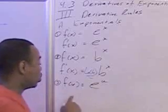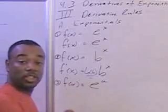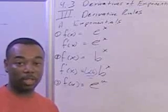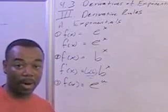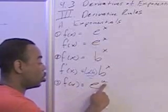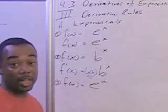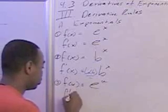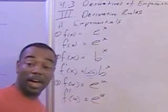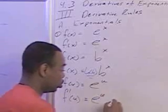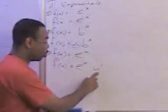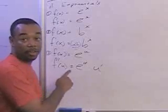Next, let's say the input value is u rather than x, and u represents a function. So we now are using a function as input — this is a function within a function, or a composite. If the input is a composite and you take the derivative of e to the u, the derivative will be e to the u times the chain rule, which is u prime, because u is a function and not a variable.